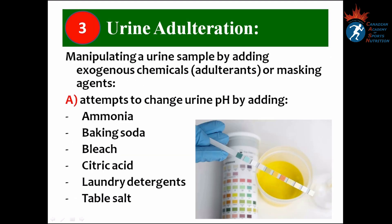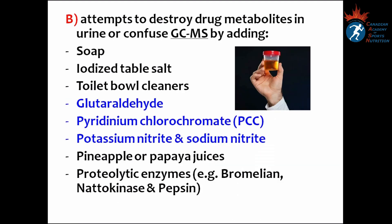Number three, urine adulteration — manipulating a urine sample by adding exogenous chemicals, adulterants, or masking agents. Athletes may attempt to change urine pH by adding ammonia, baking soda, bleach, citric acid, laundry detergents, or table salt. They may also attempt to destroy drug metabolites or confuse the GCMS — gas chromatography mass spectrometry — machine by adding soap, iodized table salt (iodine is an oxidizing agent which may mask THC detection by confusing GCMS).